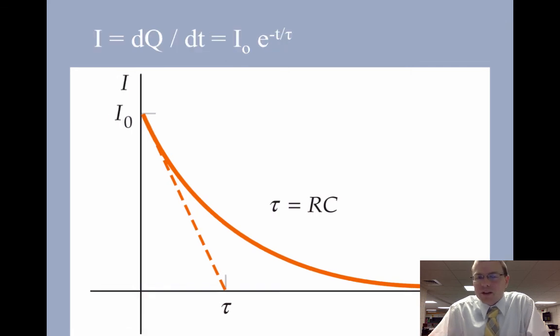At one time constant, you're at 37% of your original current, then 13% of your original current.